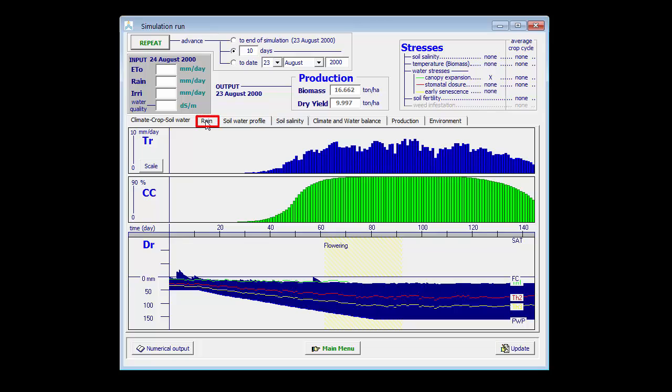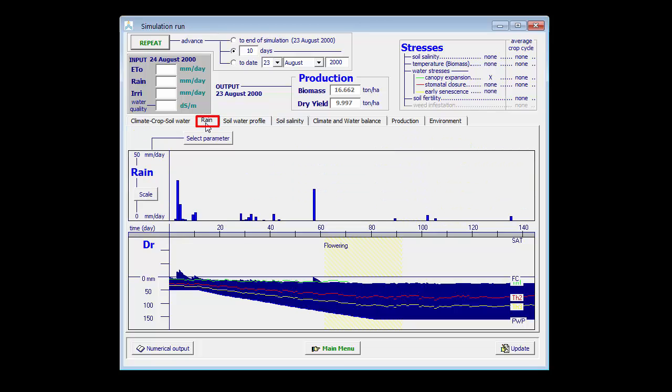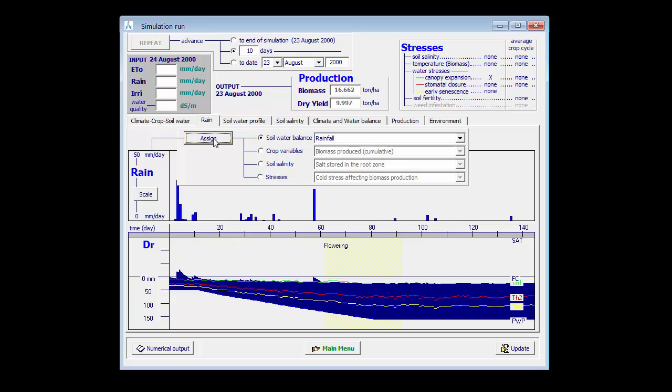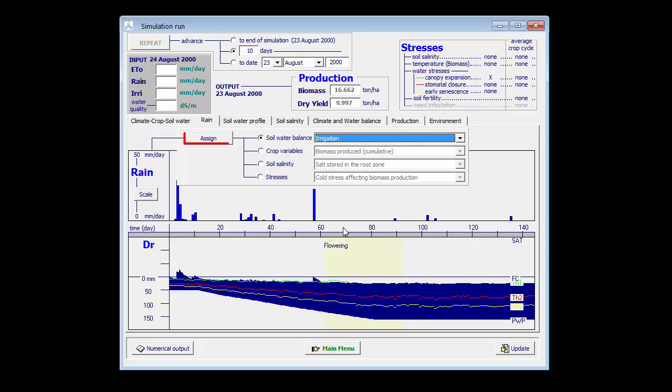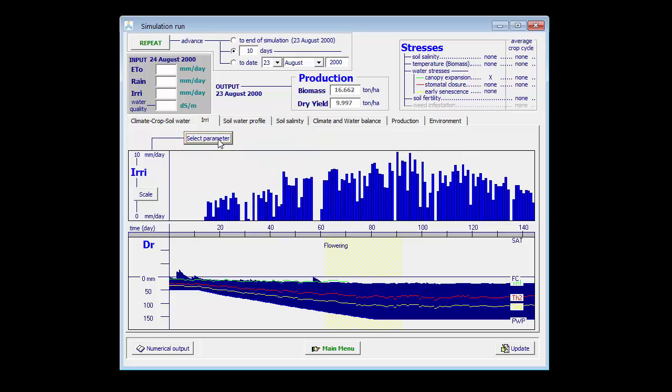In the second tab sheet, which is rain at the moment, I can plot one or another parameter. I select another parameter, which is linked with the soil water balance and which is irrigation. I assign it, and now I can see the net irrigation requirements throughout the season, which are non-existing at the beginning of the season, because there is still enough rainfall.